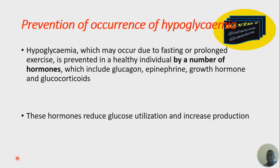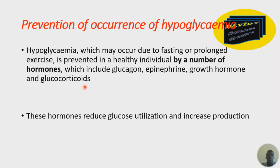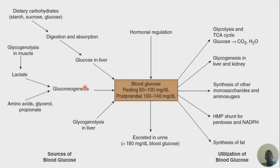Hypoglycemia can be more deadly than hyperglycemia because the brain requires glucose — a coma can occur when there is too little glucose in blood. The four counter-regulatory hormones are: glucagon from the alpha cells of the pancreas, epinephrine from the adrenal medulla, growth hormone released by the adenohypophysis, and glucocorticoids released by the zona fasciculata of the adrenal cortex.